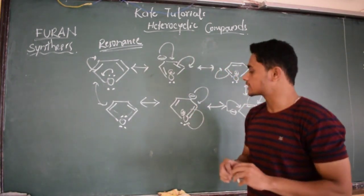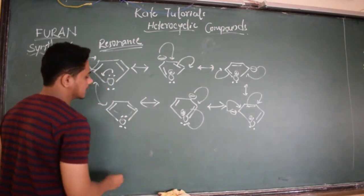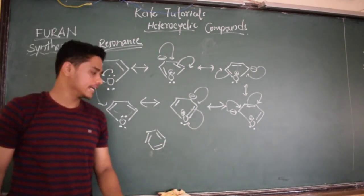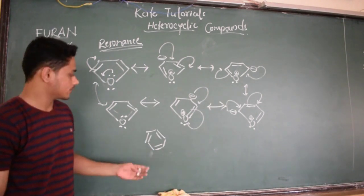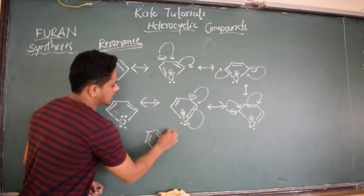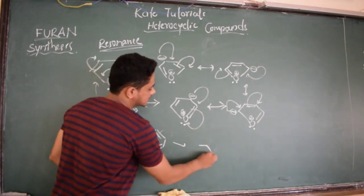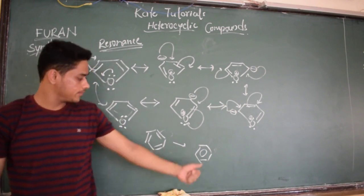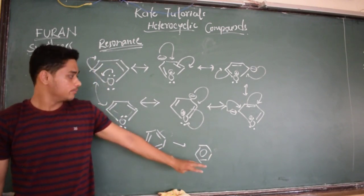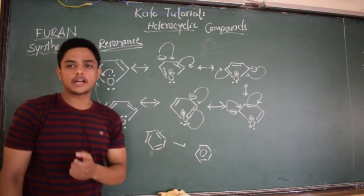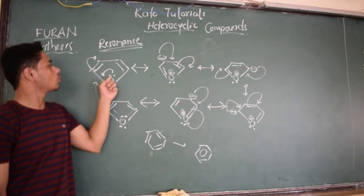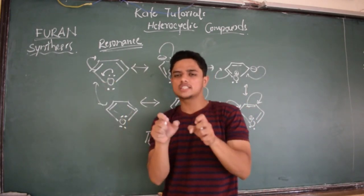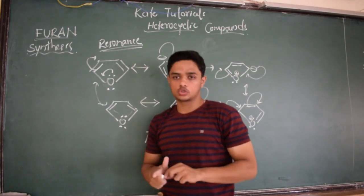If we consider a homocyclic compound like benzene — where all atoms are carbon — it is homocyclic and has 6 pi electrons, so it is aromatic, and shows resonance too. But which is more aromatic? My answer is benzene is more aromatic, because oxygen is electronegative. Due to this electronegativity, oxygen does not easily donate its lone pair of electrons — it donates, but holds the electron density toward itself.